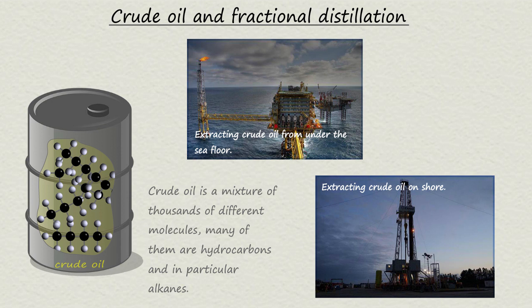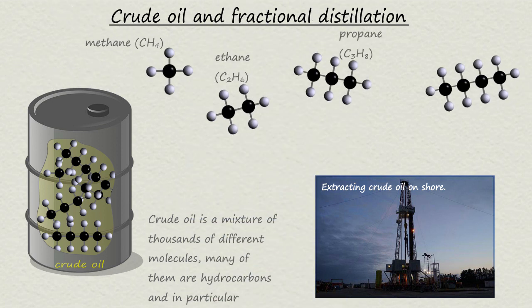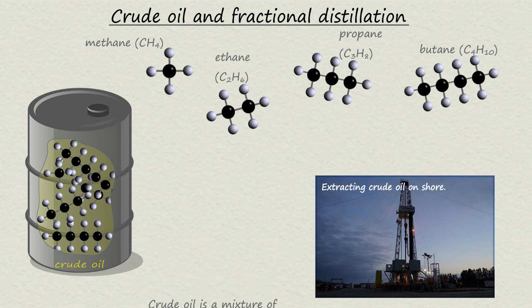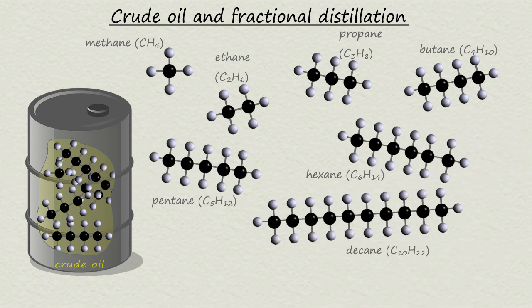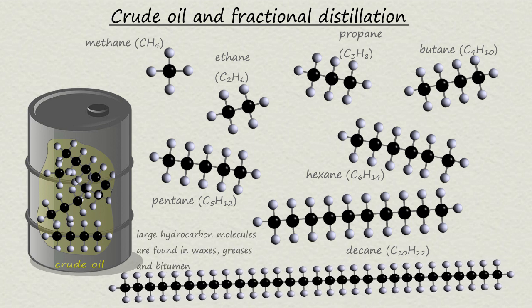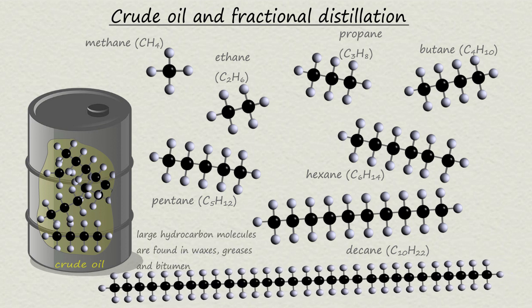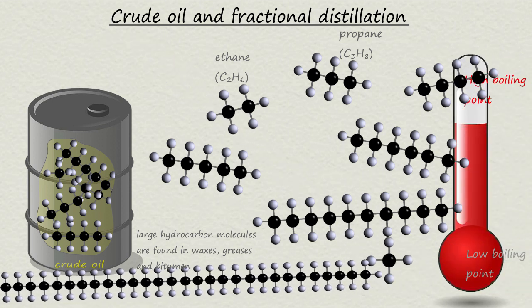Crude oil is a mixture of thousands of compounds, mainly hydrocarbons and alkanes in particular, such as methane, ethane, propane, butane and larger molecules such as hexane and decane. And even very large hydrocarbon molecules with over 35 carbon atoms in them are found in substances such as bitumen and waxes.